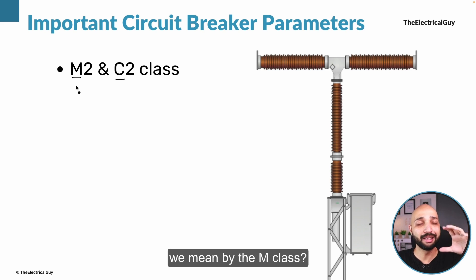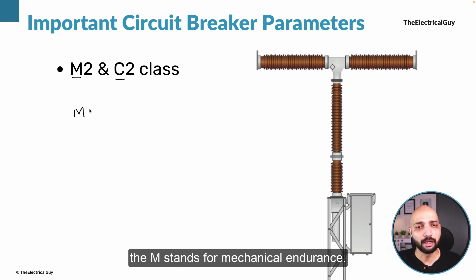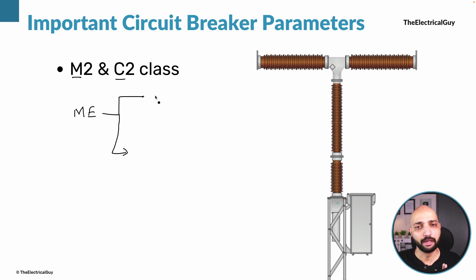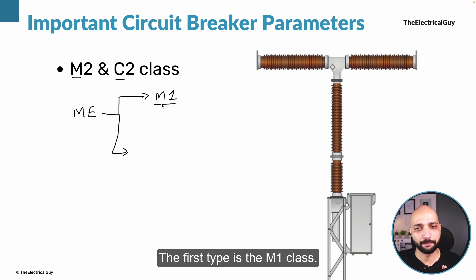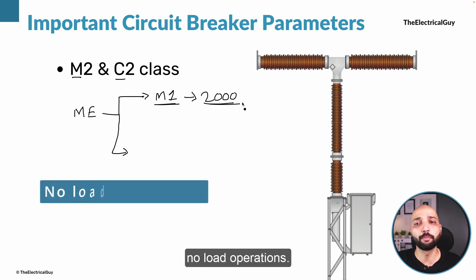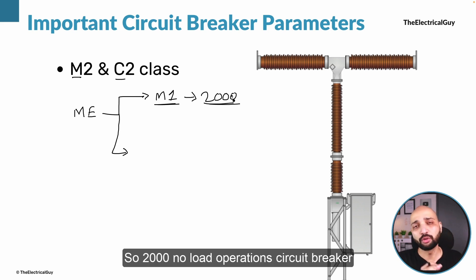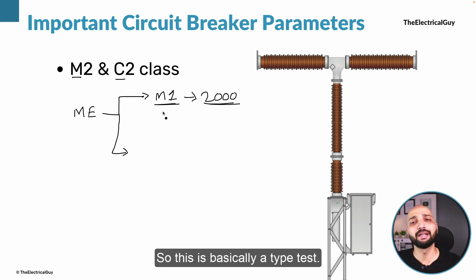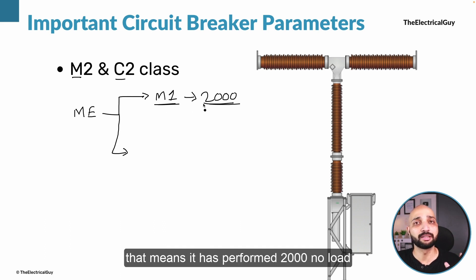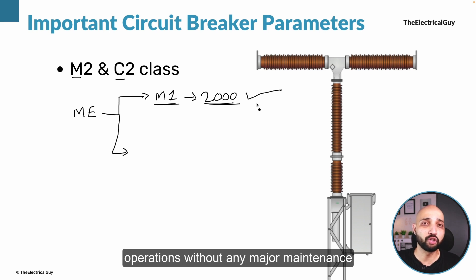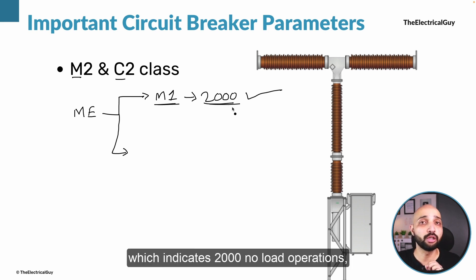Let us first start by understanding what is M2 and C2 class. The M stands for mechanical endurance class. As per IEC, this mechanical endurance class is divided into two types. The first type is M1 class, which means the circuit breaker needs to perform around 2000 no-load operations without having any major maintenance during testing. So this is basically a type test.